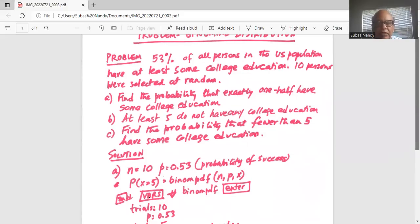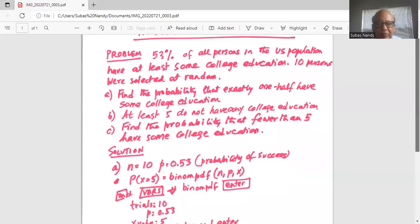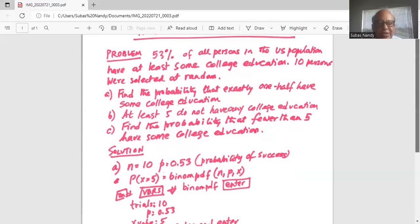So in our calculator TI-84, we will press second button, then vars, and then scroll down to binomial PDF. When we bring our cursor, when it is aligned with binomial PDF, then we will hit enter.